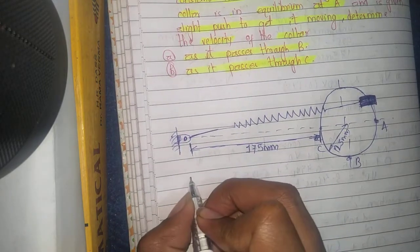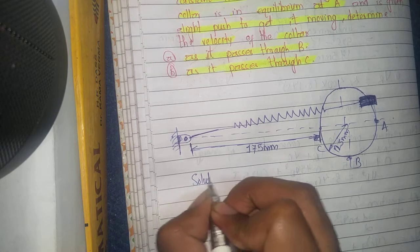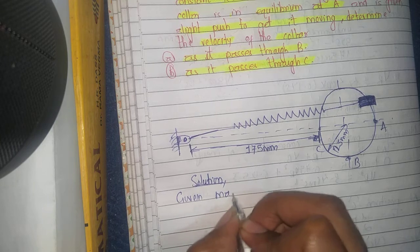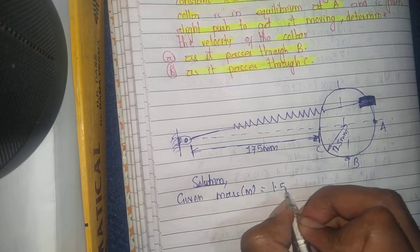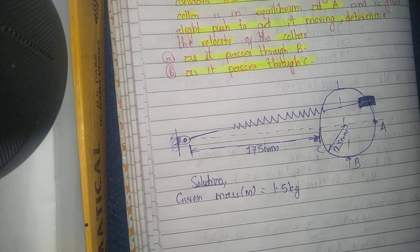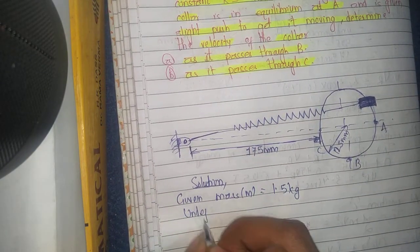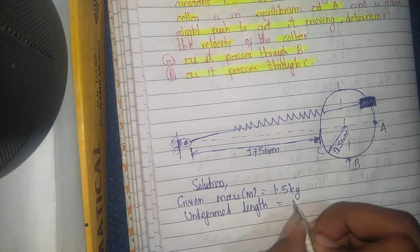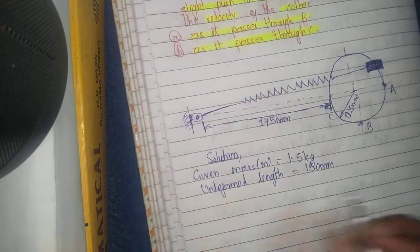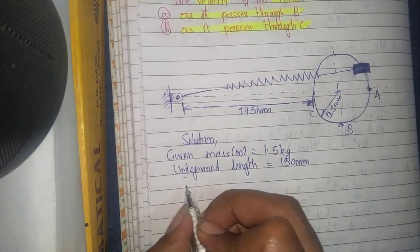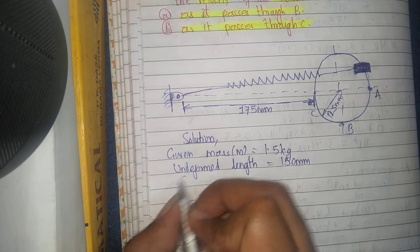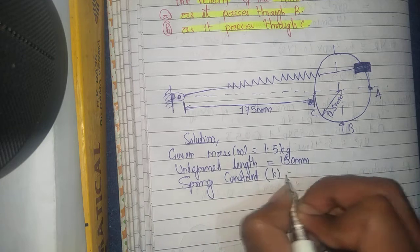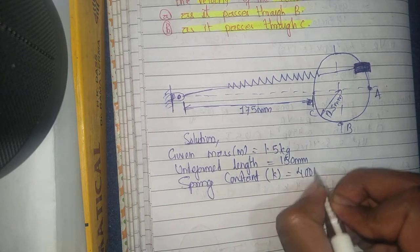Solution: Given — mass m equals 1.5 kg, undeformed length equals 150 millimeters, and spring constant k equals 400 Newton per meter.